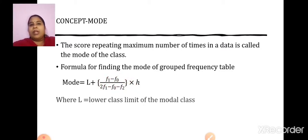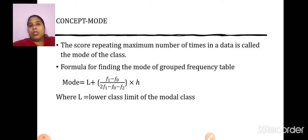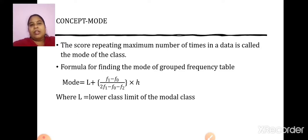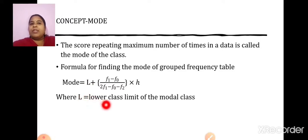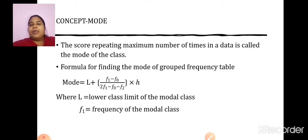Now, I will explain each and every term used in this formula. L is nothing but the lower class limit of the modal class. Just as I told you the method to find the median class, there is a method to find the modal class also. Once I know the modal class, the lower limit of that modal class is this capital L used in the formula. L represents the lower limit of the modal class. Then, F1 represents the frequency of the modal class.